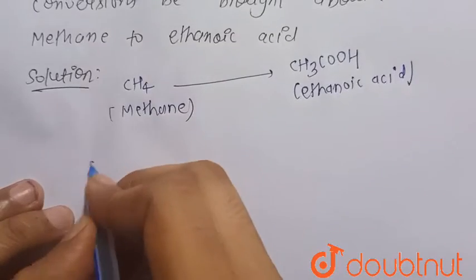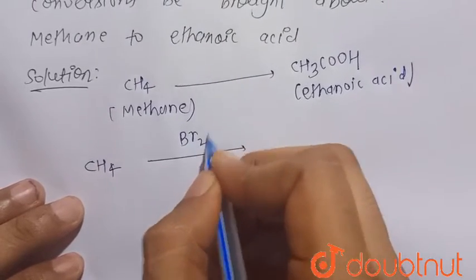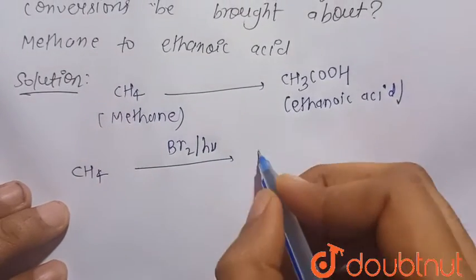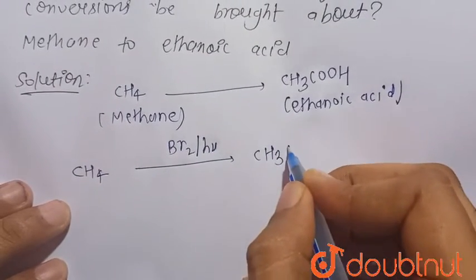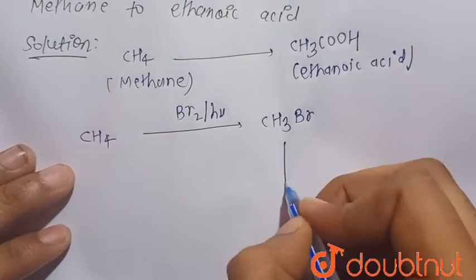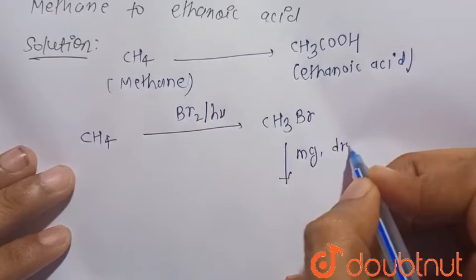So first, starting from the methane, first it is treated with bromine in presence of hν, that is, this is the free radical reaction. So there is a formation of methyl bromide, that is CH3Br. Now in the next step it is treated with magnesium in presence of dry ether.